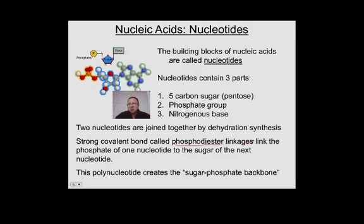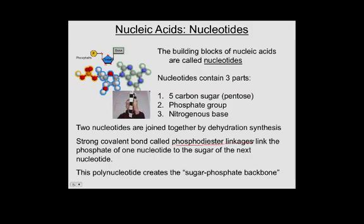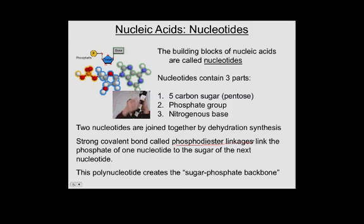The phosphodiester linkage is the strong covalent bond analogous to the peptide bond in proteins, the ester linkage in lipids, and the glycosidic linkage between monosaccharides. When we build a polynucleotide, we get what is called the sugar-phosphate backbone. In this basic model of a DNA molecule, the nitrogenous bases attach to the deoxyribose (the 5-carbon sugar), while the white squares represent the sugar and the black squares represent the phosphate group — giving you an alternating pattern of sugar, phosphate, sugar, phosphate, and so on.